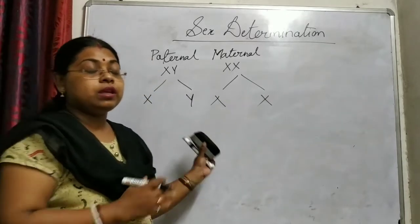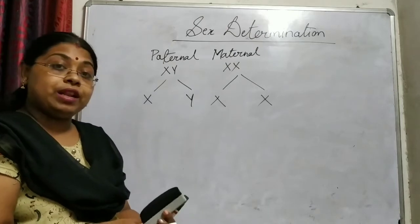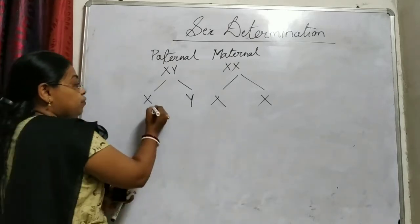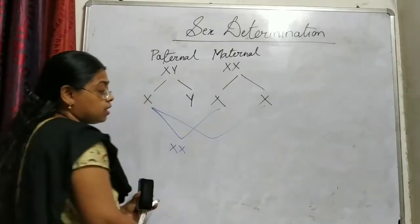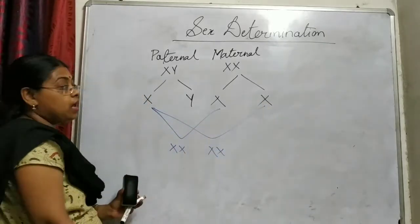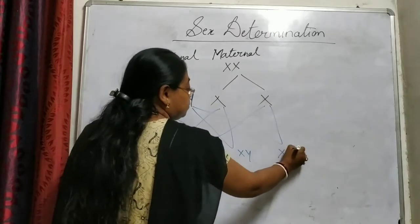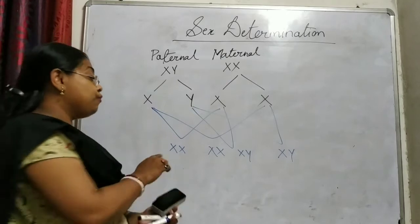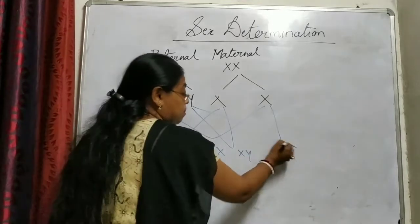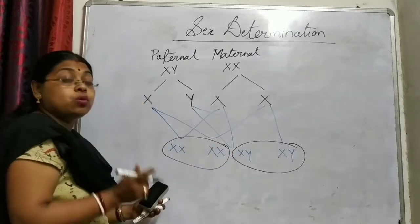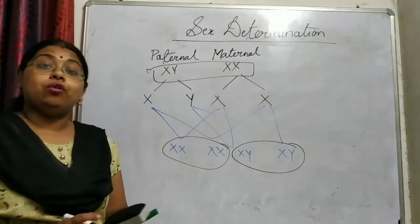There are variations in combining these gametes, and there are possibly two varieties of genetic makeup. First variety: if X and X get combined, it forms XX. If Y combines with X, it forms XY. So out of these four possible genetic combinations, only two phenotypes will form — one is male and the other is female. Male and female formation depends upon the genetic makeup of the parents.